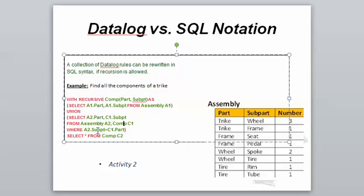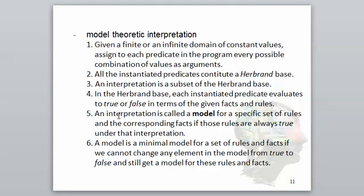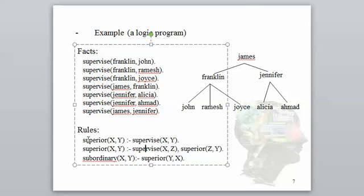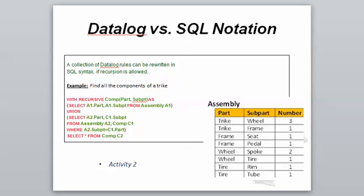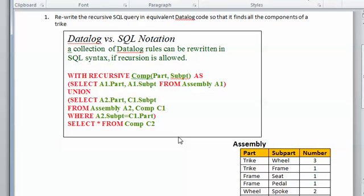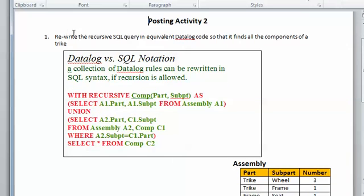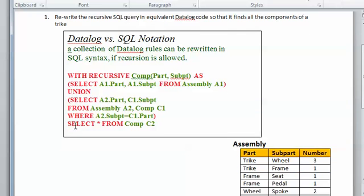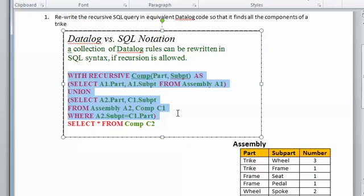Here we're creating the table 'comp': get the two directly from the table 'assembly', and then the union — like an OR — is the other way of getting those elements. C is a sub-part of A by joining table 'assembly' with this table, doing the join, and then executing the selection for the query. The definition of the table actually ends right here — this is equivalent to the two rules we were doing.